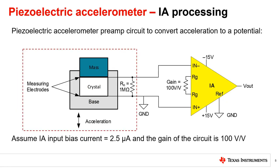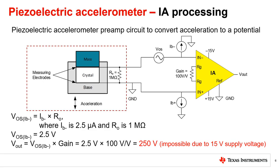Here is a simplified schematic of a piezoelectric accelerometer preamp circuit to convert acceleration to a voltage potential. In this example, the accelerometer has a very high output impedance, or RO, of 1 megaohm. Assume the IA we selected has an input bias current specification of 2.5 microamps. The effect of this input bias current results in a voltage drop, which creates an additional offset at the IA's inverting input equal to IB minus multiplied by RO — where IB minus is 2.5 microamps and RO is 1 megaohm — simplifying to 2.5 volts. This offset does not include the intrinsic VOS of the IA; we're focusing on the error due to IB specifically.